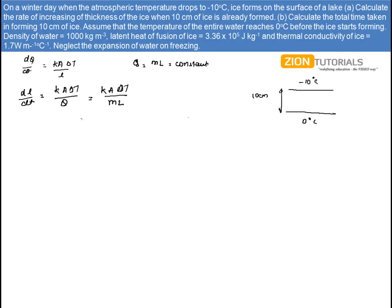So substituting the values over here, I have the value of K as 1.7. Area of cross section, right now, let it be A. Delta T is, of course, 0 minus 10, that is 10.